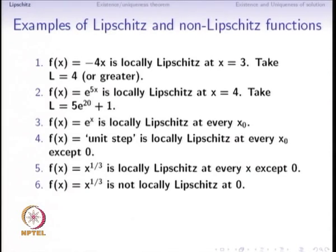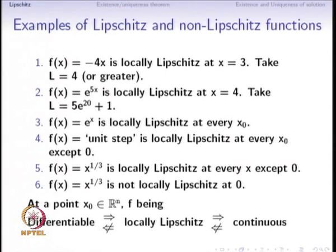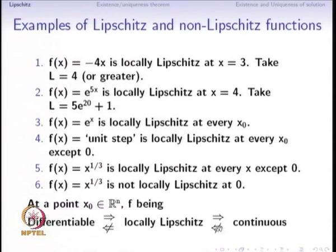The same function f = x^(1/3) is not locally Lipschitz at x = 0. We can conclude: if f is differentiable at x0, then it is locally Lipschitz at x0. If it is locally Lipschitz at x0, it implies that it is continuous at x0. Conversely, if f is continuous at x0, it does not imply that it is locally Lipschitz at x0.